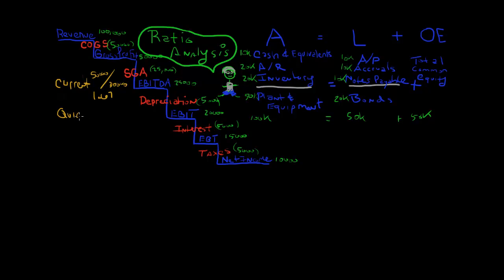The quick ratio looks at all the current assets except the least liquid, which is inventory. Inventory is at the bottom, which means as I work my way down, they become less liquid. If I remove this $20,000, now I have $30,000 instead of $50,000, divided by $30,000. So now my quick ratio is 1 times. Now what do these numbers mean, the 1.67 and the 1? Is that good or bad?